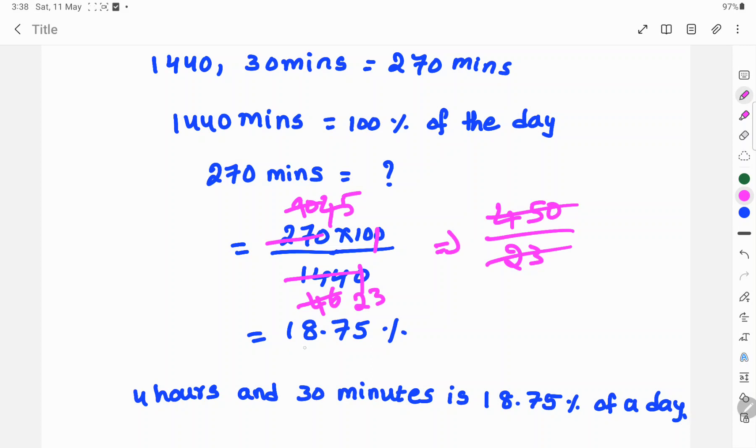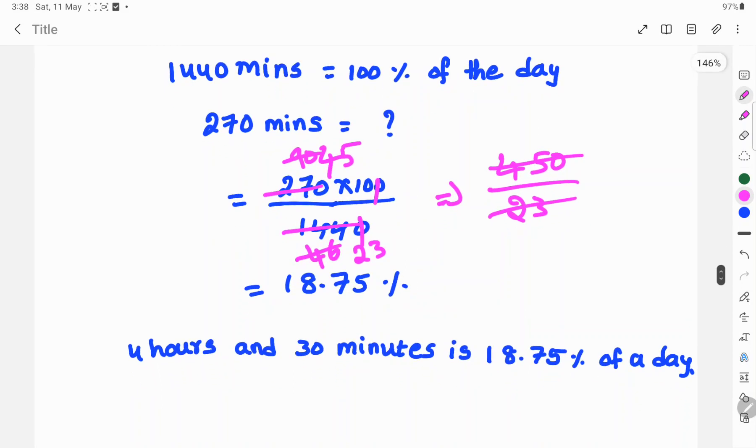This one, this one cancels, that gives us 18.75%. So 4 hours and 30 minutes is 18.75% of the day.